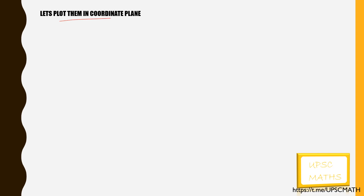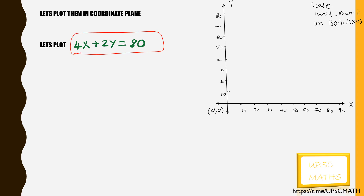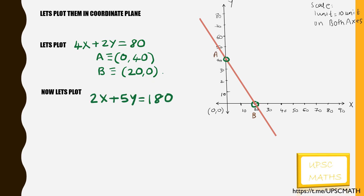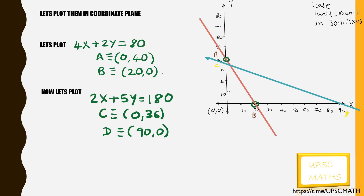Let's plot the points in the coordinate plane. Let's first plot the line 4x plus 2y equal to 80. We have the points A and B — plotting them gives us the first line. Now let's plot the second line. We have the points C and D, and so we get the second line.